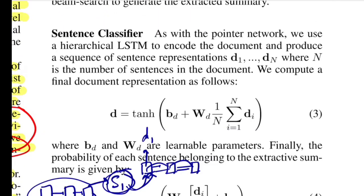To summarize the first extractive method: you input words one by one, get a sentence vector representation, then another LSTM layer takes sentence representations and learns contextual sentence representations. The decoder applies attention over all sentence vectors, and at every decoder step tries to predict the next sentence that should be part of the extractive summary.